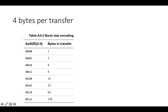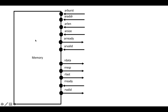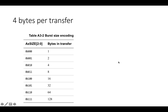We're doing 4 bytes per transfer, and this is determined by the size port. AR size specifies the number of bytes in each transfer of the burst. The size field is 3 bits wide, and the number of bytes is 2 to the value of the field — so if it's 0, we have 1 byte; if it's 1, we have 2; if it's binary 2, we have 4, and so on. Since we're doing 4 bytes per transfer, we put 010 on the size bus.